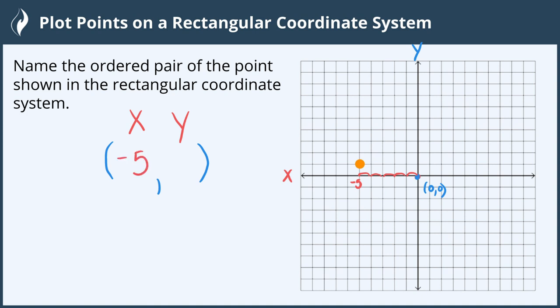From this we move up one unit in the y direction. Moving up is a positive direction, so the y coordinate is positive one, so our ordered pair is negative five, one for the point plotted on this coordinate system, and we're all done.